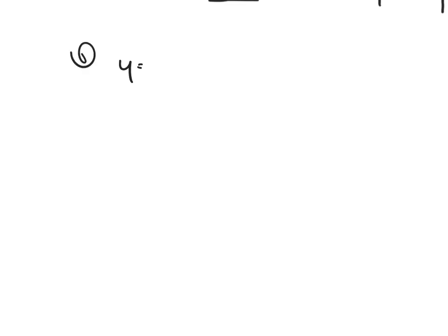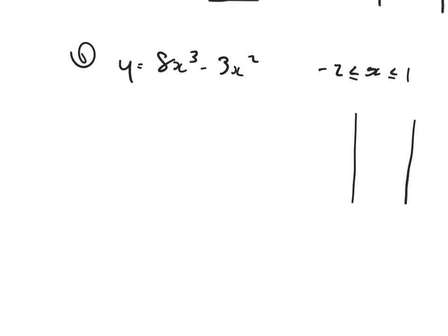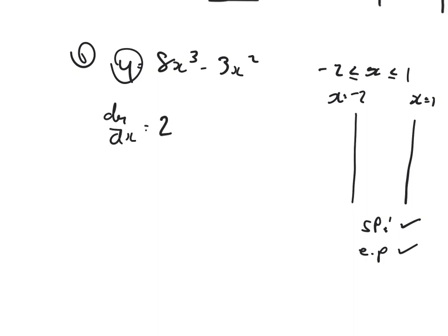For the following function, find the max and min values within the given closed intervals. Example one: y equals 8x cubed minus 3x squared. The closed interval is between minus 2 and 1, so we're looking at a snapshot of this curve between the x-coordinate of minus 2 and the x-coordinate of 1. Remember that we need to check stationary points and we need to check endpoints. We're looking for maximum values — that is a measure of the y-coordinate because that is a measurement of the height. Let's first investigate stationary points — remember, positions of 0 gradient.